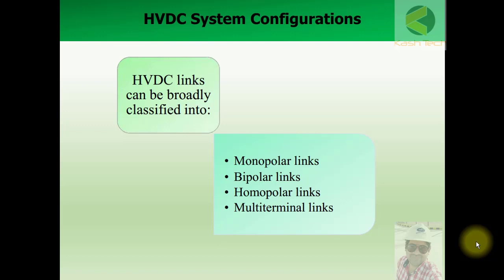Welcome. Now we will discuss HVDC system configurations, covering different components and configurations of HVDC systems. HVDC links can be broadly classified into monopolar links, bipolar links, homopolar links, and multi-terminal links. In the next lecture, I will cover all these links one by one.